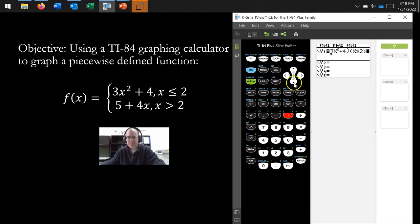So we're going to skip to the second line and put in the other function. So we're going to have 5 + 4x, and that is going to be for x strictly greater than 2. So again, to access this inequality symbol, go to second test, and there it is. Enter, and then 2.